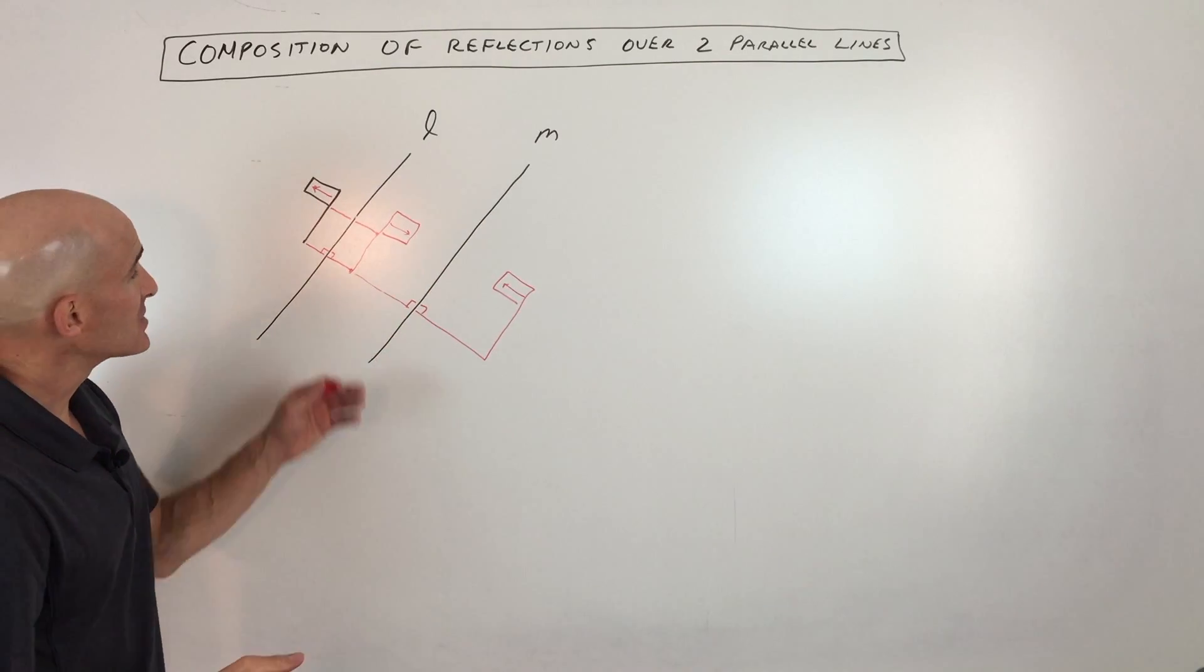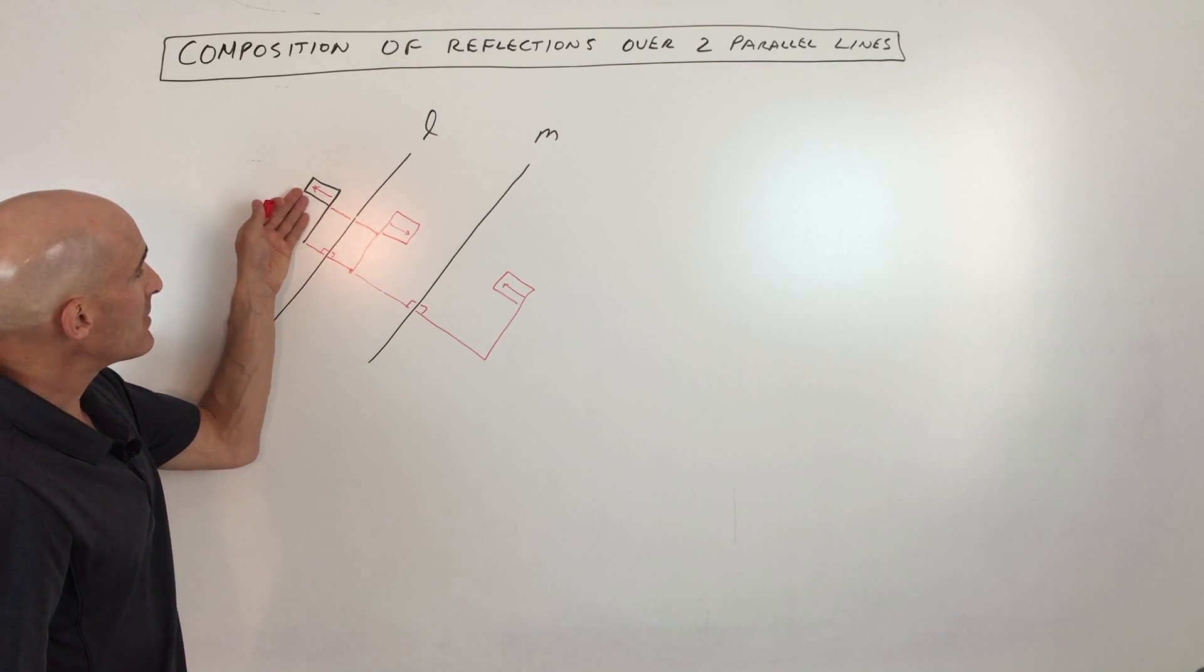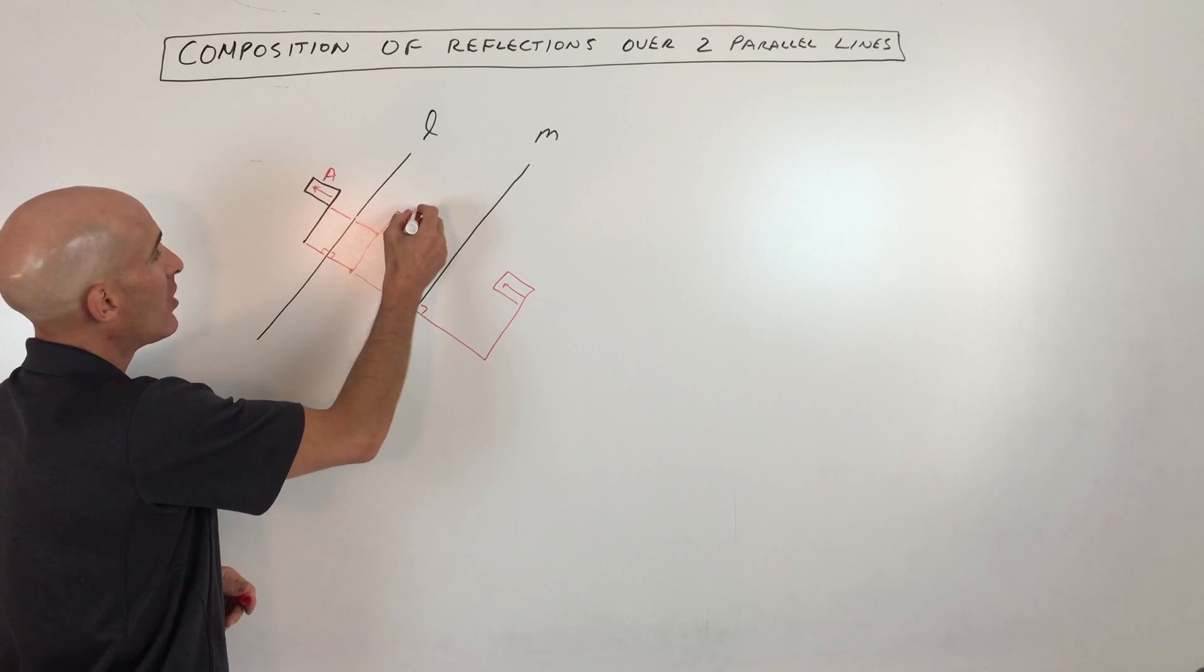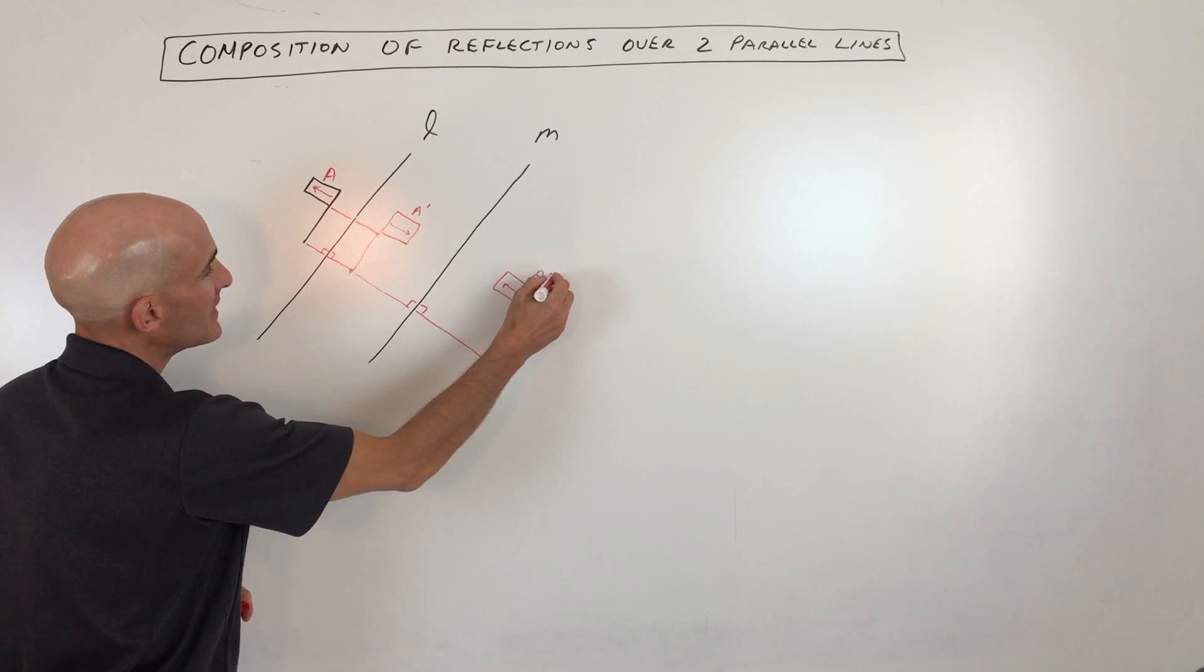So what ends up happening is this pre-image, we'll just call this a, we'll call this one a prime, we'll call this one a double prime.